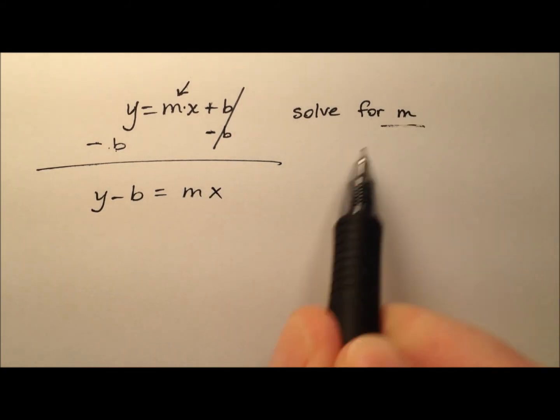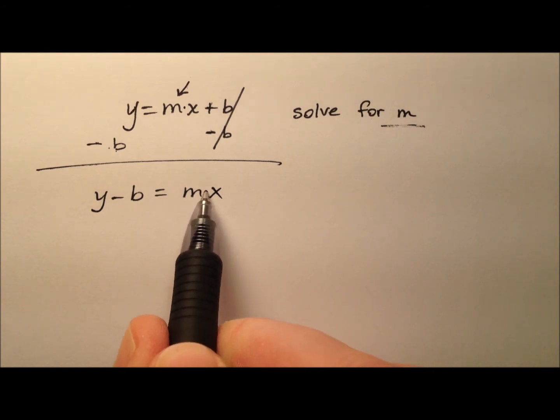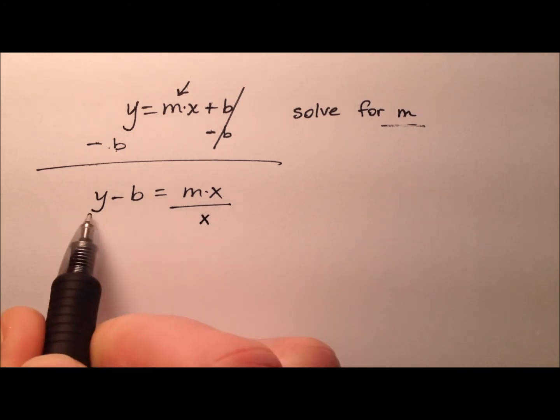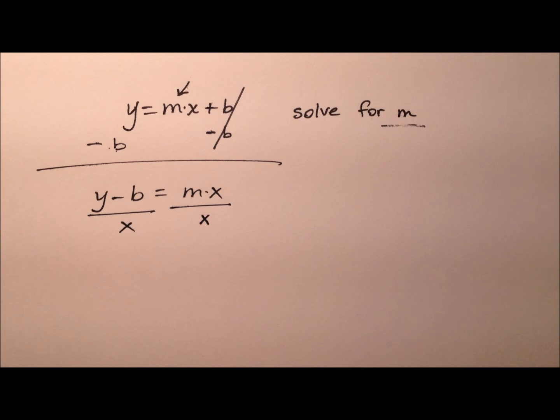And so to finish solving for m here, this m and the x are being multiplied. So let's go ahead and do the opposite, or the inverse operation of multiplication, and let's divide. And so we'll divide by that x.